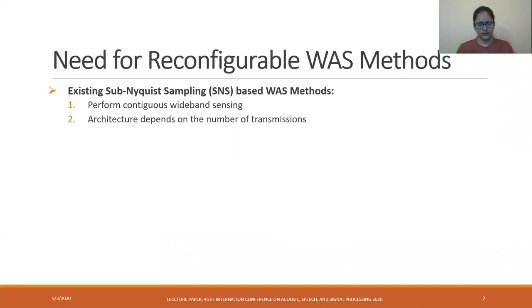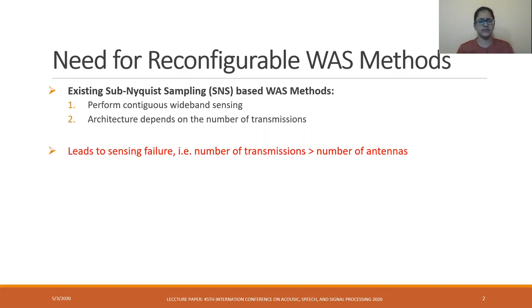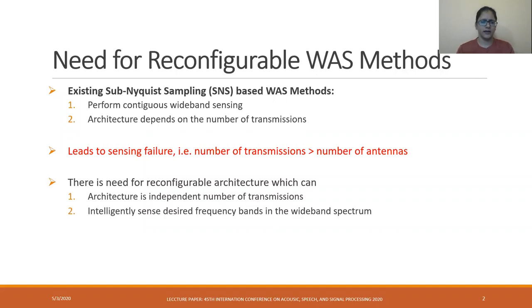The existing work in wideband angular spectrum sensing utilizes the sub-Nyquist sampling technique, which allows digitization at a rate much lower than the Nyquist rate. However, these methods suffer from two major limitations. First, they perform sensing over the entire wideband spectrum, which is not desired as some frequency bands like Wi-Fi, radar, and licensed bands cannot be accessed due to high traffic and security constraints. Furthermore, these architectures depend on the number of transmissions, causing sensing failure whenever the number of transmissions is higher than the number of effective antennas. So there is a need for a reconfigurable architecture that can work independent of the number of transmissions, and there is a need for intelligent sensing that can perform sensing over desired frequency bands in the wideband spectrum.